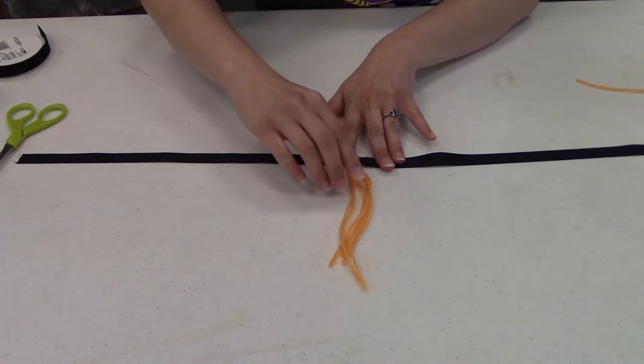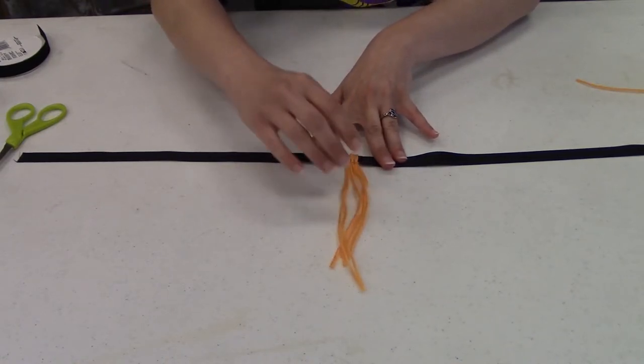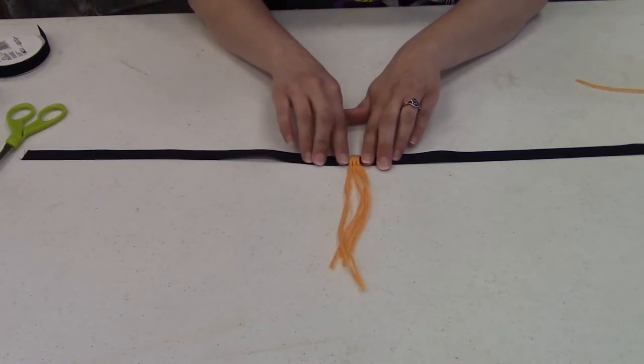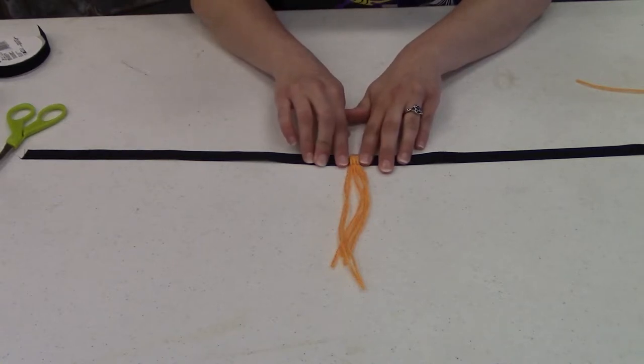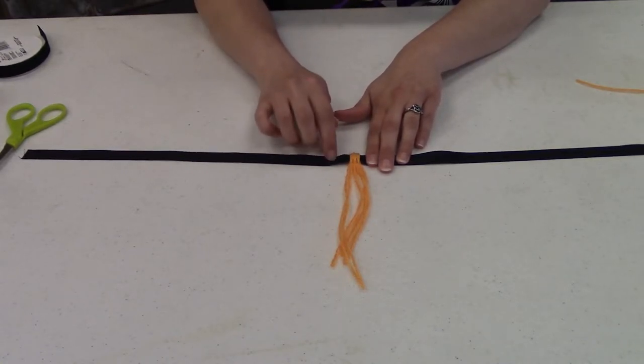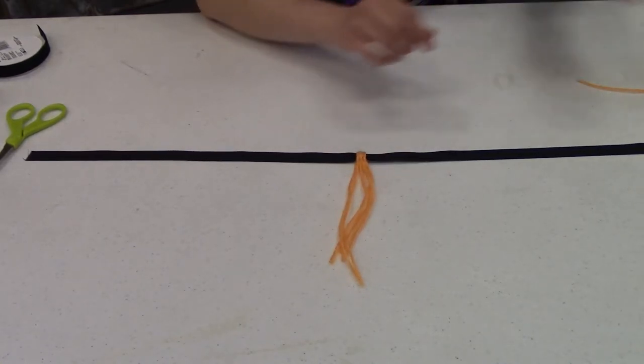You know, it may take a couple tries to get the hang of it, but once you get it, it's actually pretty easy. And you're going to kind of squish all of your yarn together so you don't see the ribbon through it.